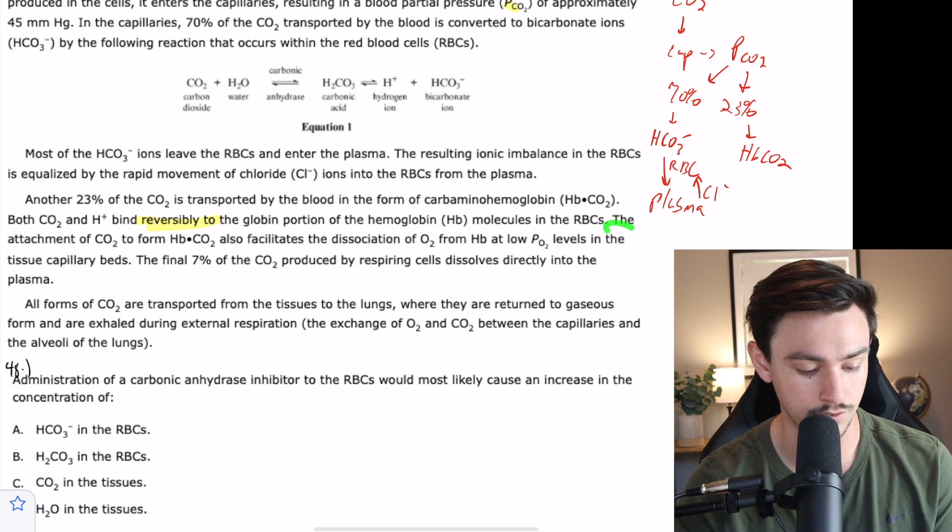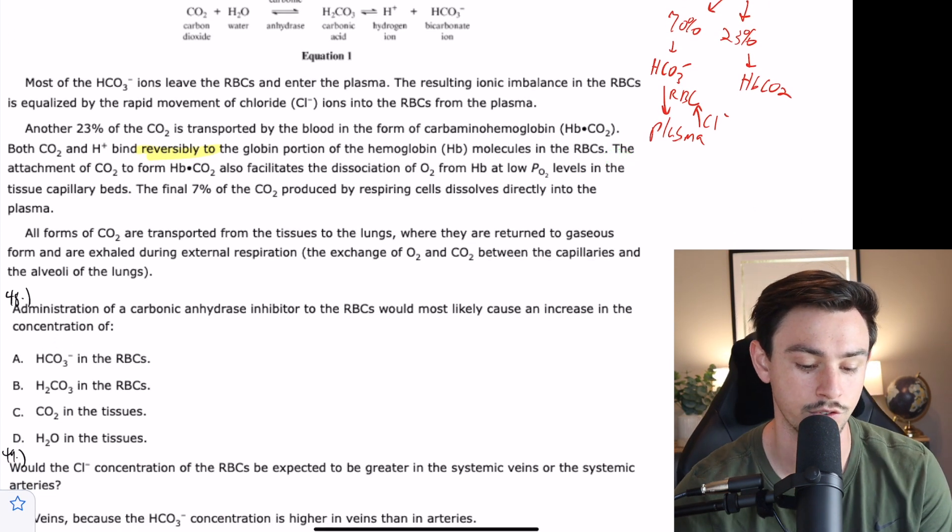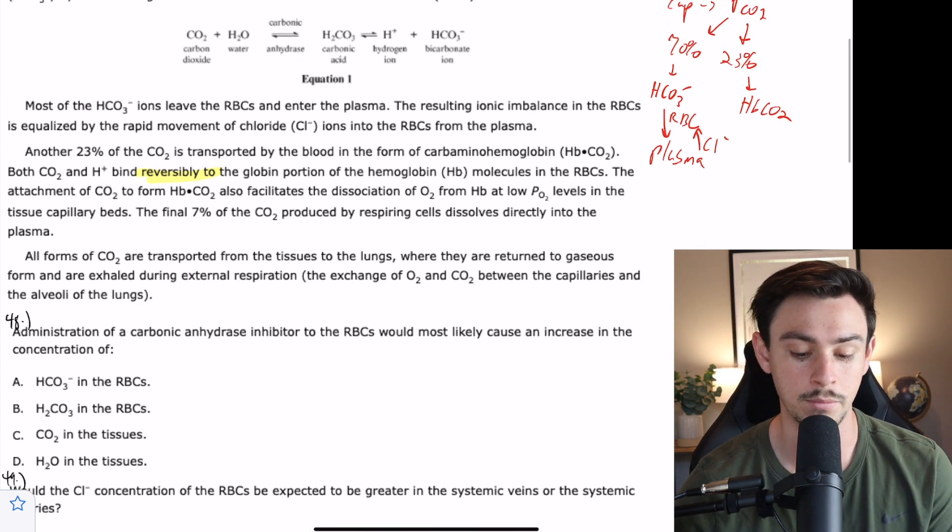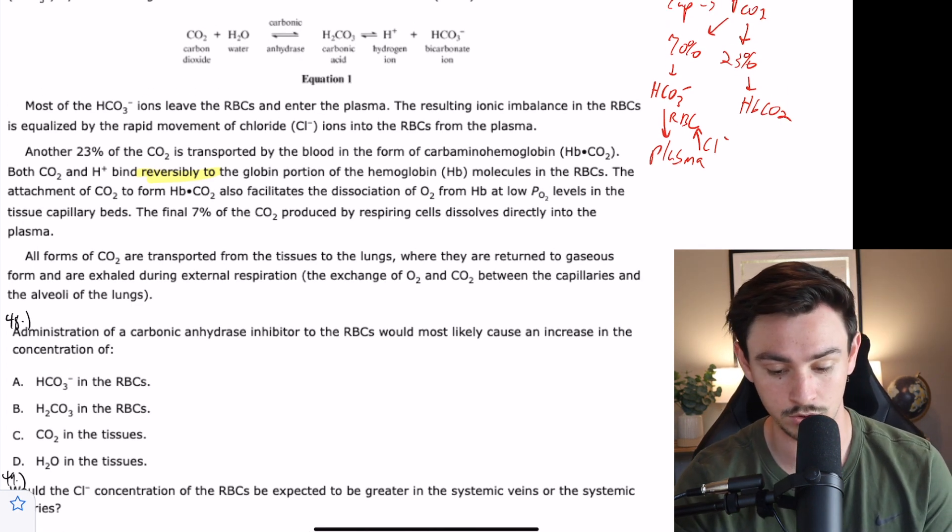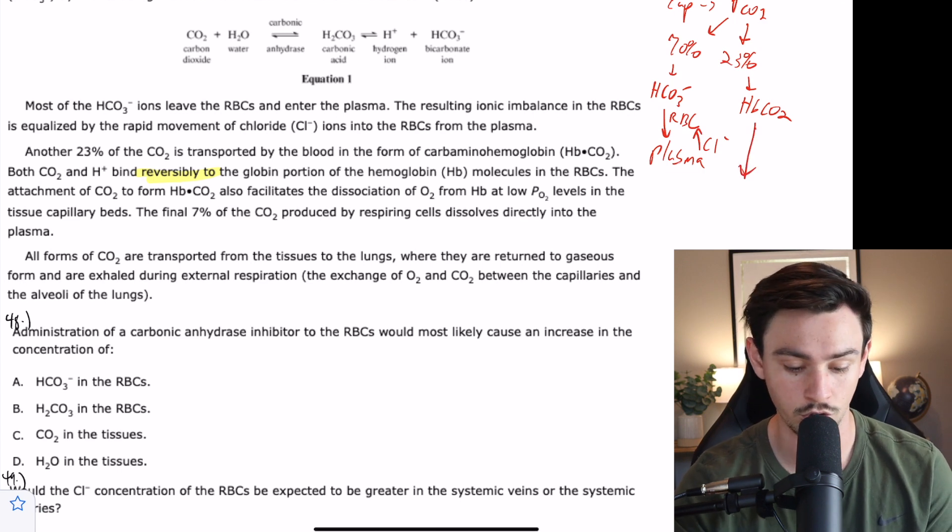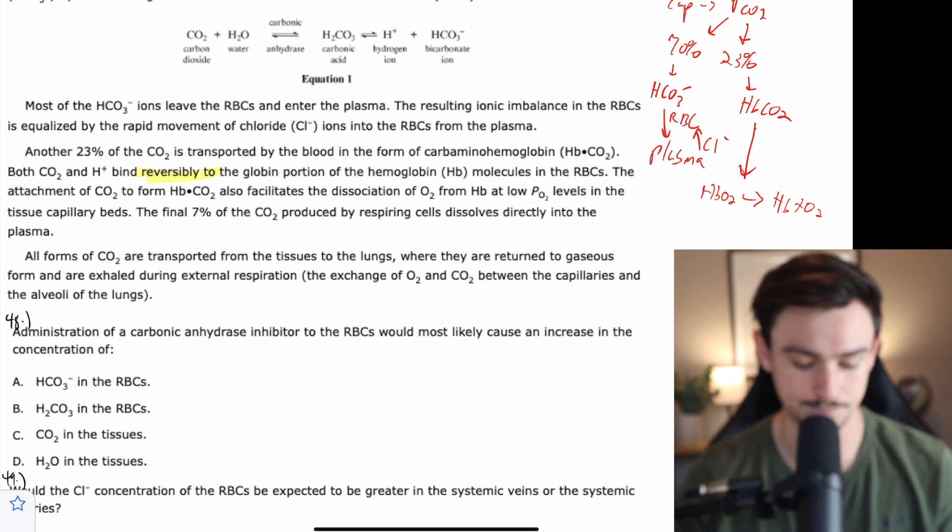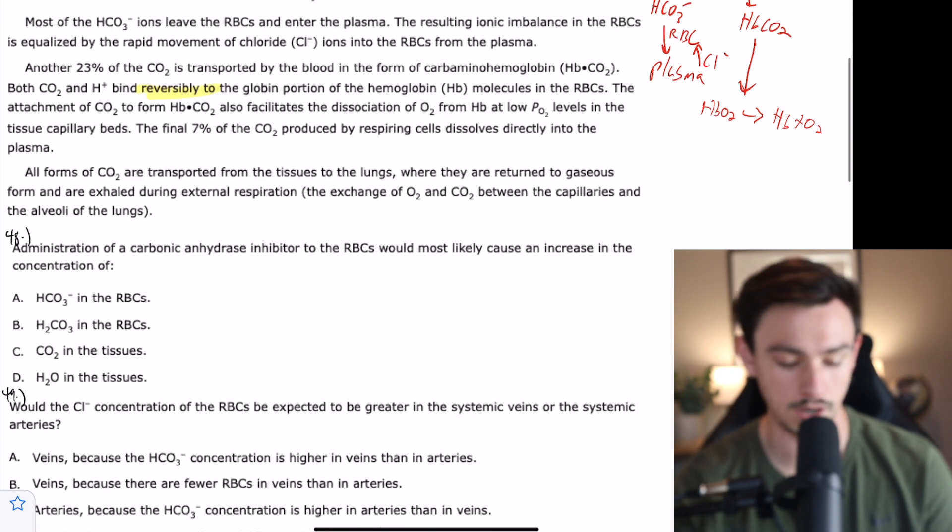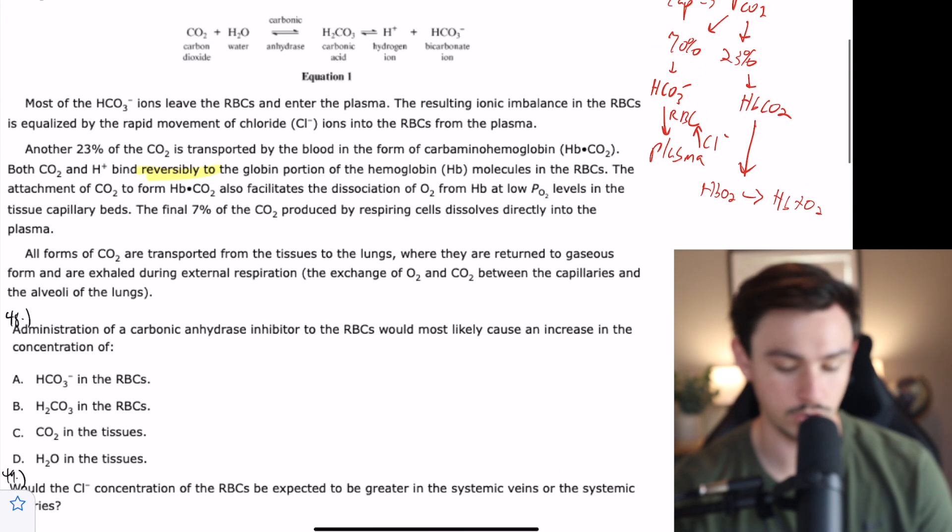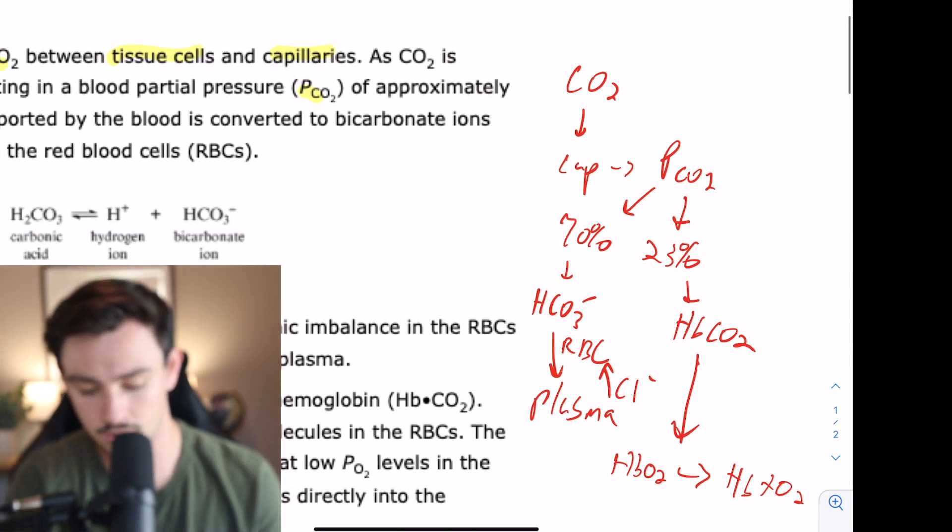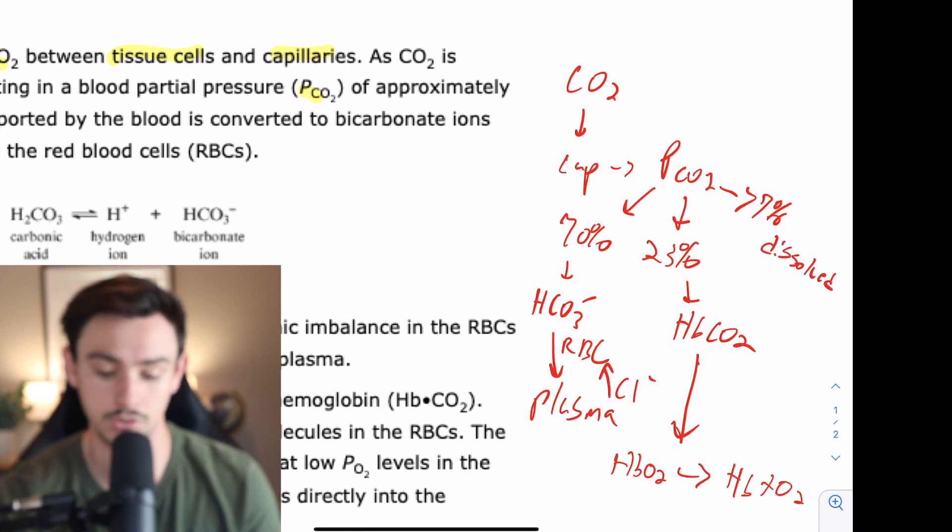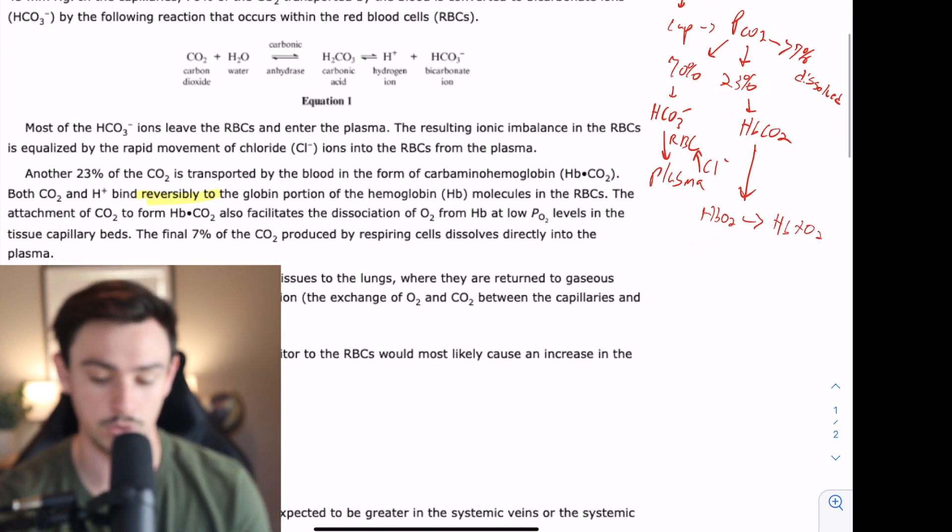The attachment of CO2 to form carbaminohemoglobin also facilitates the dissociation of oxygen from hemoglobin at low PO2 levels in the tissue capillary beds. The final 7% of the CO2 is dissolved directly into the plasma. So now we know what's going to happen to 100% of the CO2 that's in our cells.